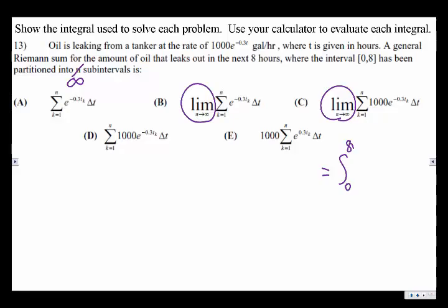This expression is equivalent to the integral from 0 to 8 of 1000 e to the negative 0.03t dt. So these two are equivalent, but again, they didn't say that. They said the Riemann sum partitioned into n subintervals. This is an infinite number of subintervals.